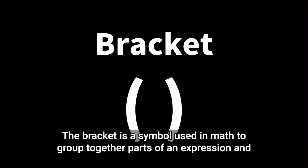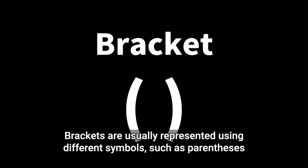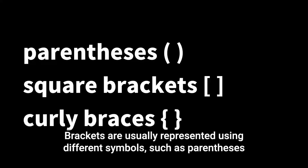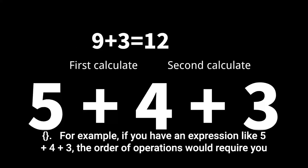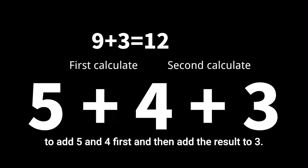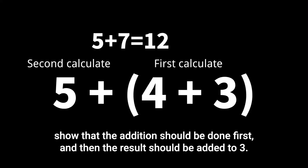A bracket is a symbol used in math to group together parts of an expression and to show the order in which mathematical operations should be performed. Brackets are usually represented using different symbols, such as parentheses, square brackets, or curly braces. For example, if you have an expression like five plus four plus three, the order of operations would require you to add five and four first and then add the result to three. However, if you add brackets to the expression, they show that a specific addition should be done first and then the result should be added to three.